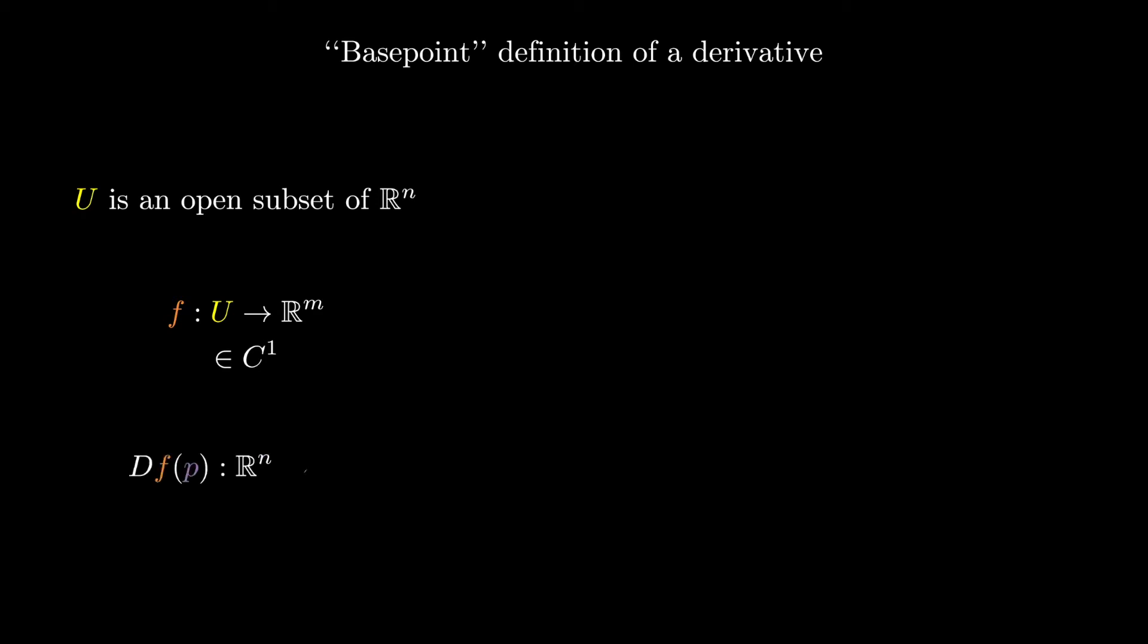Then the derivative, Df, is a function from Rn to Rm. We can associate this with what is called the Jacobian matrix, which is the following.